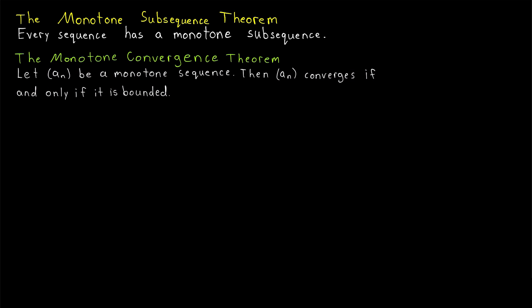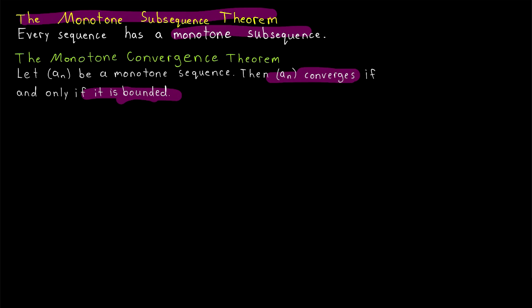Remember, for the Bolzano-Weierstrass theorem, we're trying to prove that we've got a convergent subsequence. This theorem will guarantee us a monotone subsequence. Then if we can prove it's bounded, the monotone convergence theorem will guarantee us that the subsequence converges, and then we'll be done. So give it a try yourself before watching the rest of the lesson.